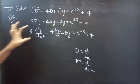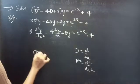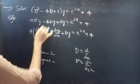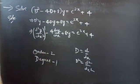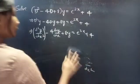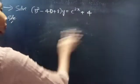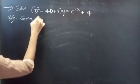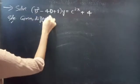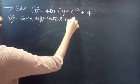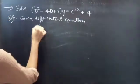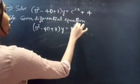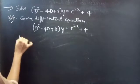Identify the highest derivative: d²y/dx² is the highest derivative, so order is 2, and the highest power of the highest derivative gives degree 1. The given differential equation (D² - 4D + 8)y = e^(2x) + 4 is in operator form.